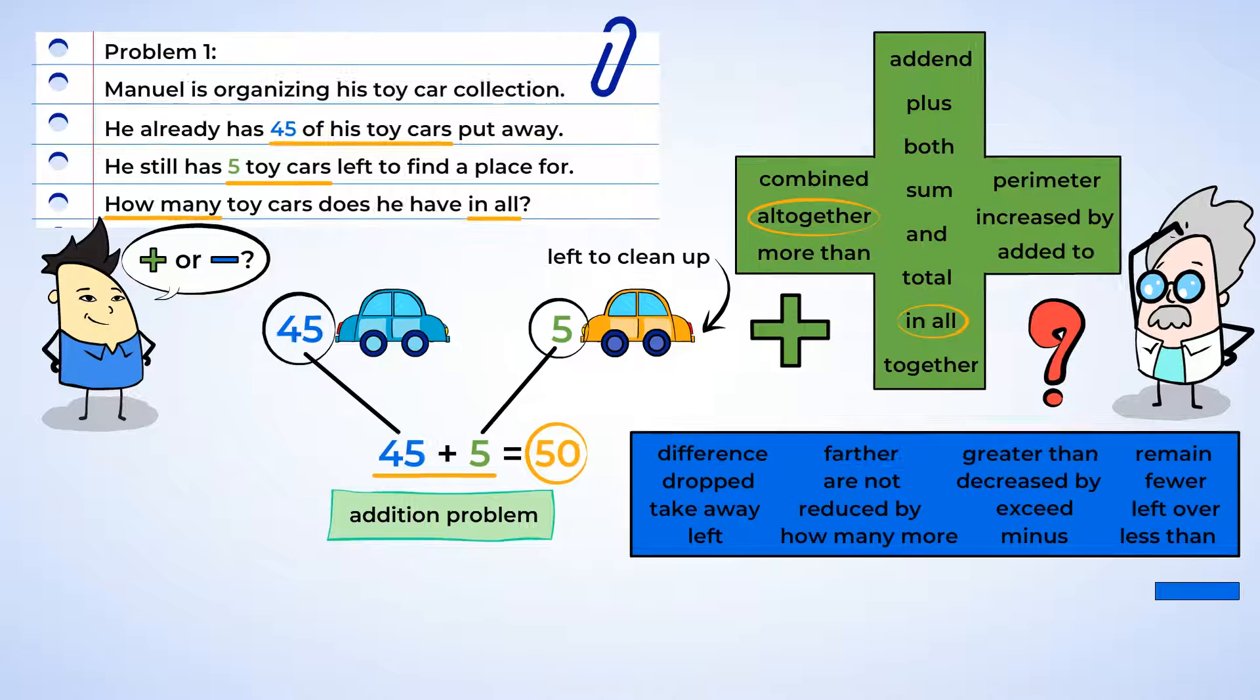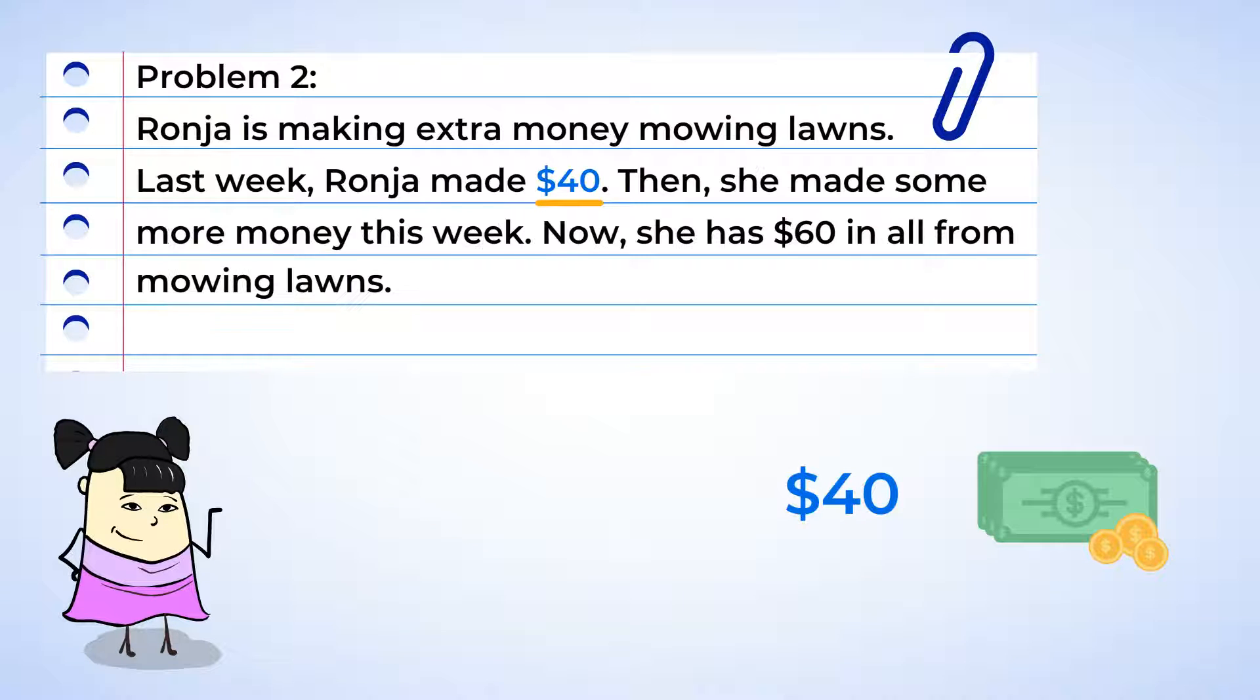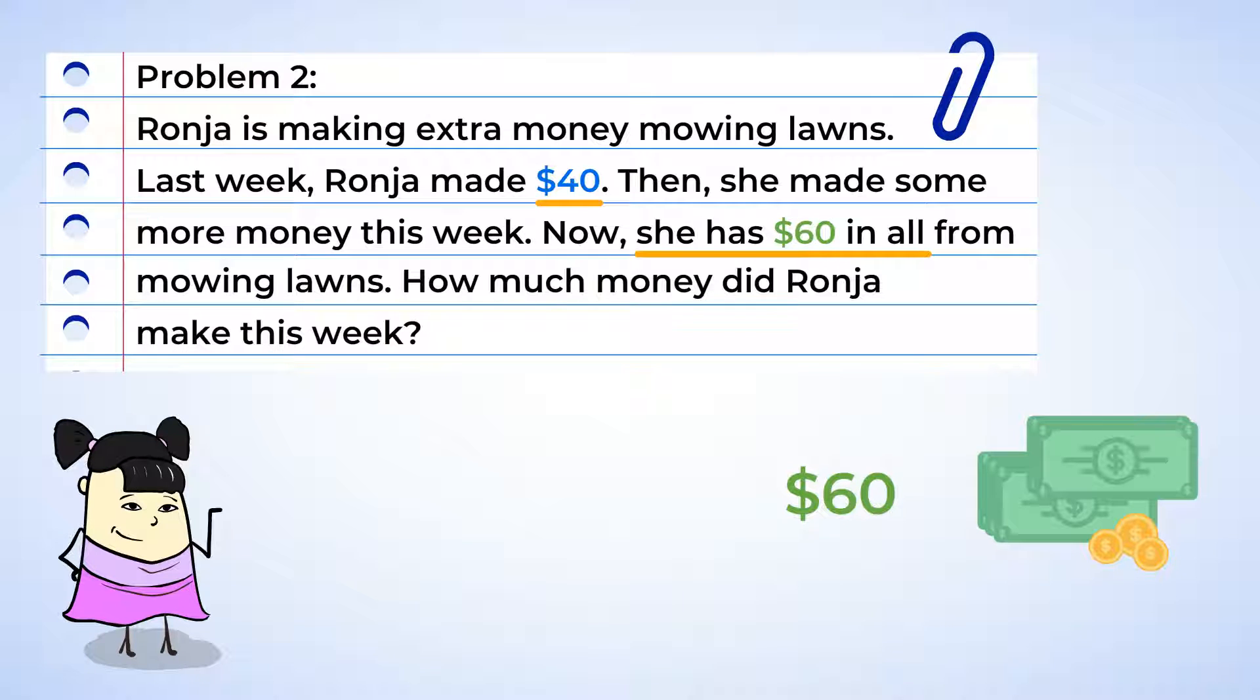But what about Ronja, who was making some extra money mowing lawns? Last week, Ronja made $40 mowing lawns. Then she made some more money this week. Now she has $60 in all from mowing lawns. Ronja wants to know how much of the money she made this week.